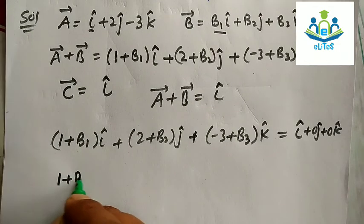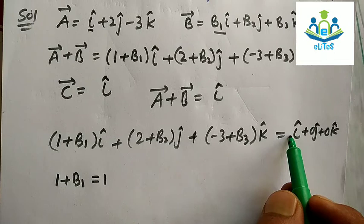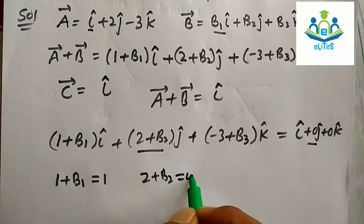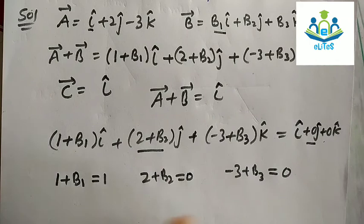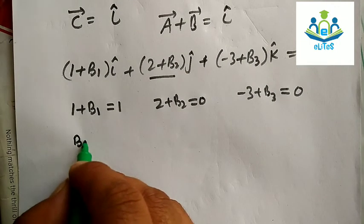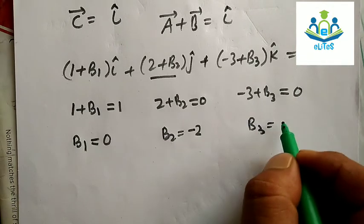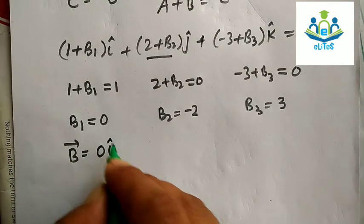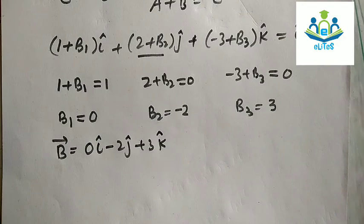Comparing components: for i, 1 + b1 = 1 so b1 = 0; for j, 2 + b2 = 0 so b2 = −2; for k, −3 + b3 = 0 so b3 = 3. Therefore vector b = 0 i cap − 2 j cap + 3 k cap.